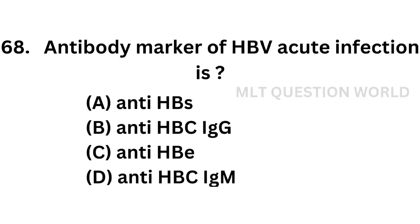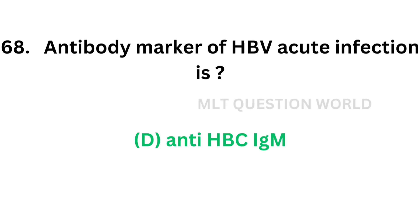Question 68. Antibody marker of HBV acute infection is: Option A: Anti-HBs. Option B: Anti-HBc IgG. Option C: Anti-HBe. Option D: Anti-HBc IgM. The correct answer is Option D. Antibody marker of HBV acute infection is Anti-HBc IgM.